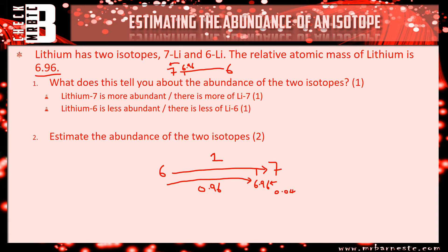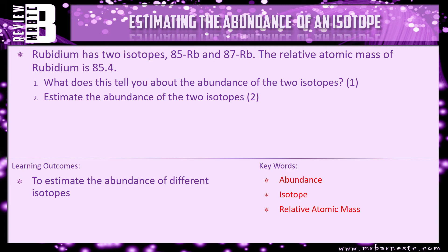So to work out my percentage of my largest abundance, which we know is this one, I go 0.96 divided by 1 times by 100, and it comes out to 96%. And then for my smallest one, which is this one here, I do 0.04 divided by 1 times by 100, and that comes out to 4%. That is everything you need to know for this video. I have got a review question for you, which is, rubidium has two isotopes, 85Rb and 87Rb. The relative atomic mass is 85.4. What does this tell you about the abundance of the two isotopes? And then estimate the abundance of the two isotopes. So exactly the same question, just with different isotopes. And that brings this video to an end.